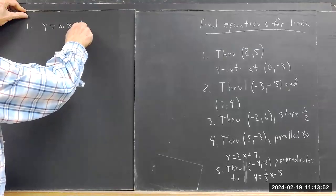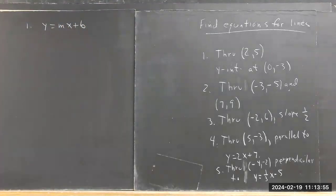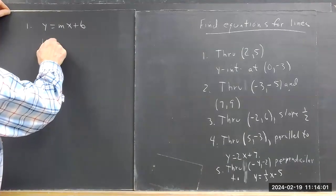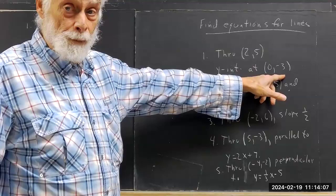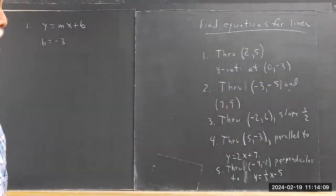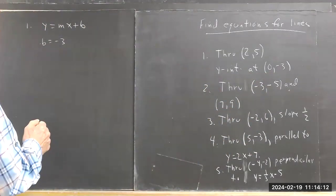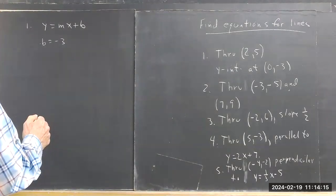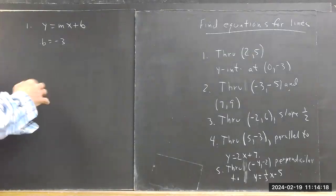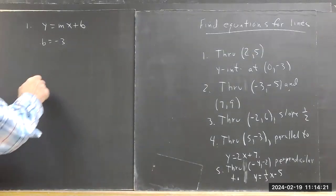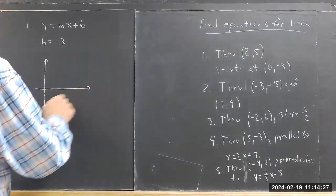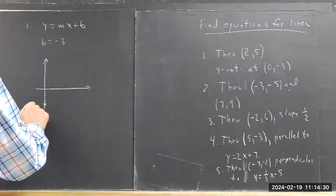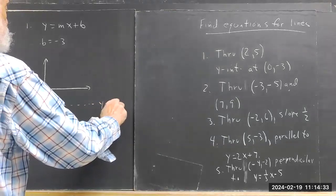First of all, you can use the y equals mx plus b form. We know that b is negative 3 because the y-intercept occurs at (0, negative 3). The y-intercept is therefore negative 3. So here is the line y equals negative 3.